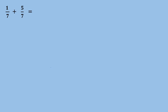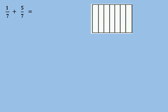We can start adding 1 over 7 plus 5 over 7 immediately. What do we have to do in this case? We have to add the two numerators and keep the same denominator. So 1 plus 5 is equal to 6 over 7.